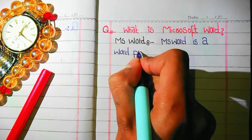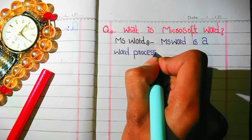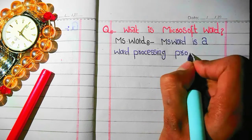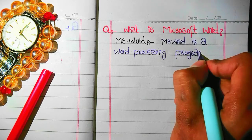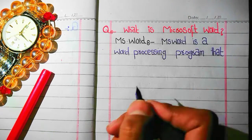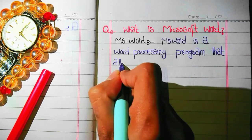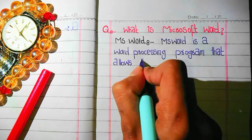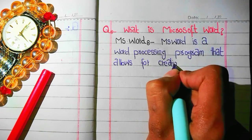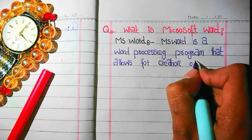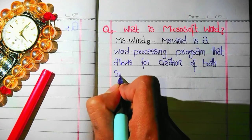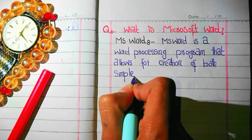MS Word is a word processing software or program that allows for the creation of both simple and complex documents.